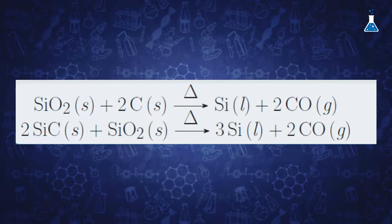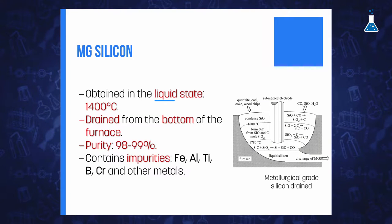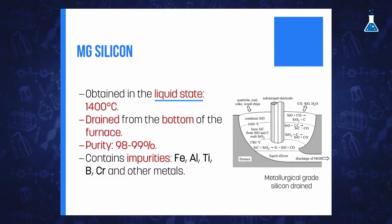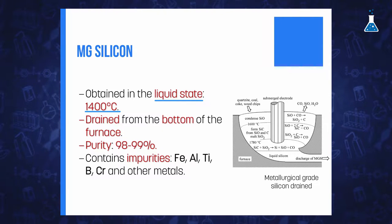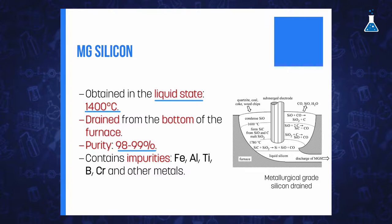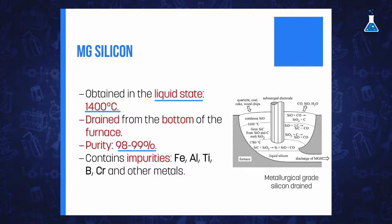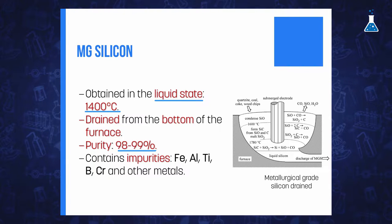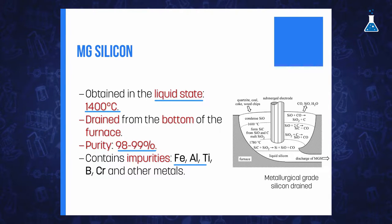The high temperatures of the process ensure that the silicon at that time is in the liquid state, because it has a melting point of 1400 degrees Celsius. Therefore, the liquid silicon can be drained from the bottom of the furnace and obtained with a purity of 98–99%. The resulting silicon is known as metallurgical grade silicon, or MG silicon, and it usually contains different impurities such as iron, aluminum, titanium, boron, and chromium and other metals.